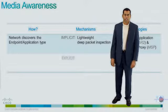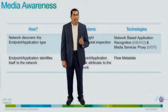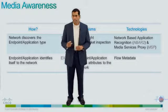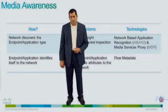Media awareness can be achieved by two different types of techniques: implicit and explicit. NBAR2, or the second generation of network based application recognition, is an implicit technique. It derives information on the application and flow by inspecting payload and packet headers. Media services proxy is another implicit technique — a lightweight deep packet inspection technique that examines the control signaling from applications to derive application and flow information.